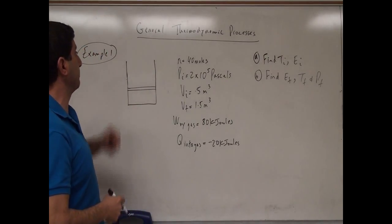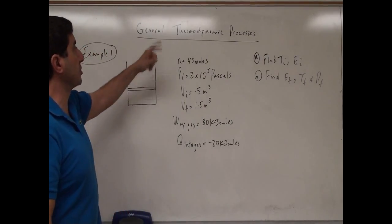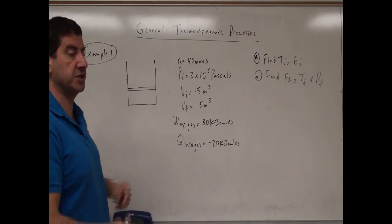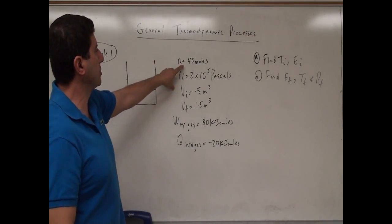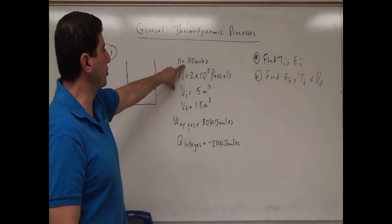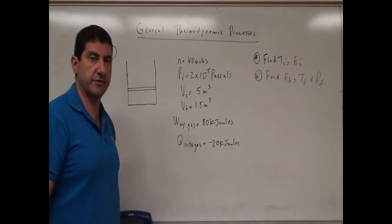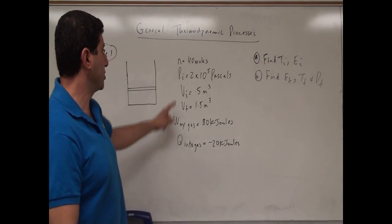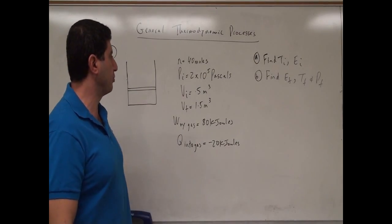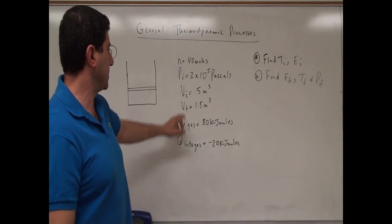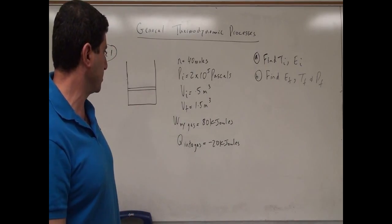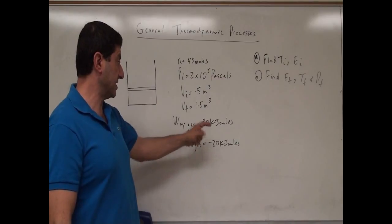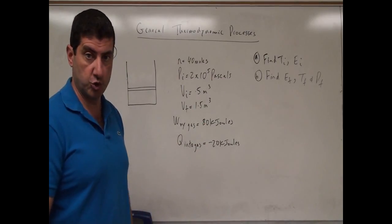Welcome back. Now we're going to do a general example called General Thermodynamic Processes, Example 1. We have a container of gas. We are told that there are 40 moles of gas. The initial pressure is 2 times 10 to the 5th pascals, the initial volume is 0.5 cubic meters, the final volume is 1.5 cubic meters, and the work done by the gas is 80 kilojoules.